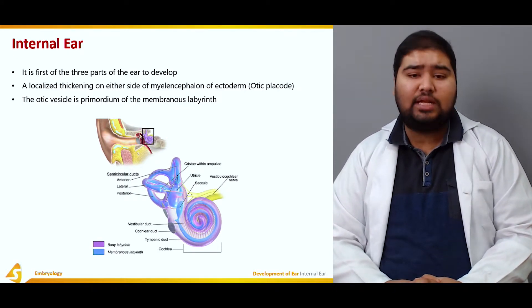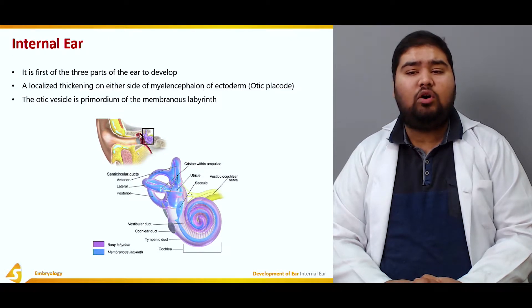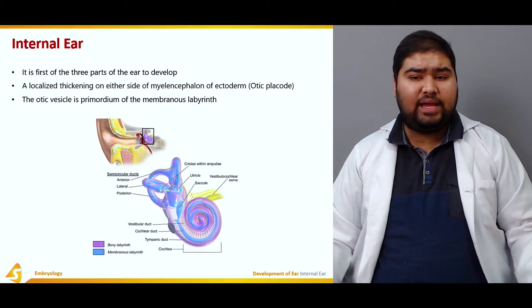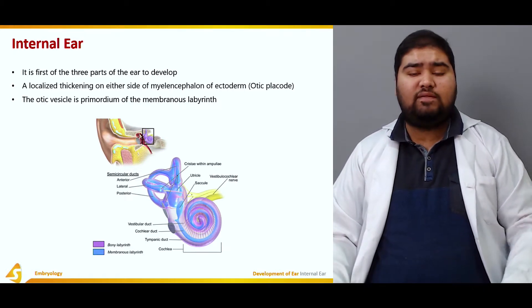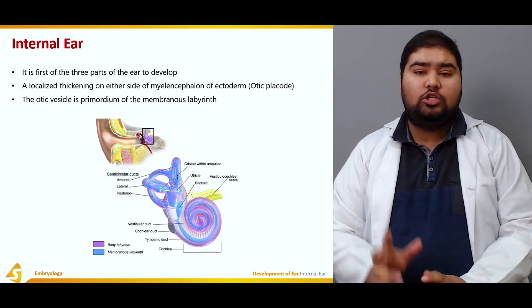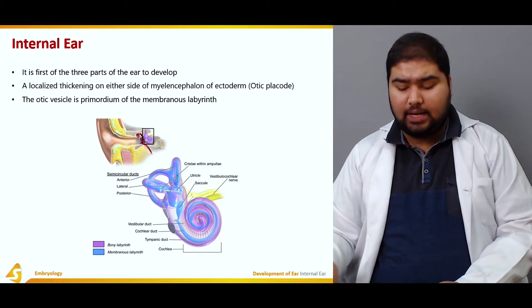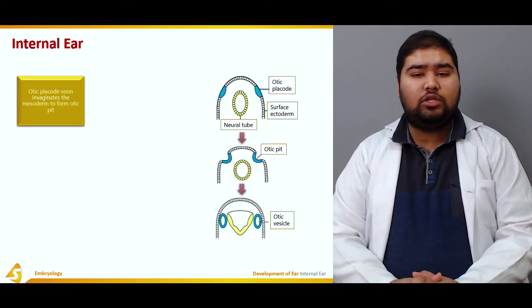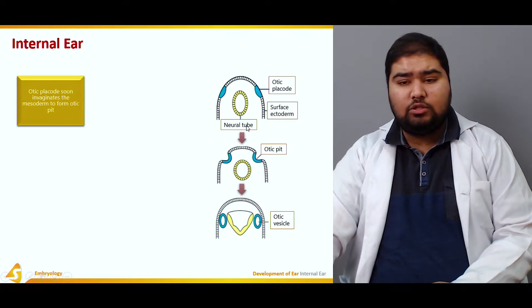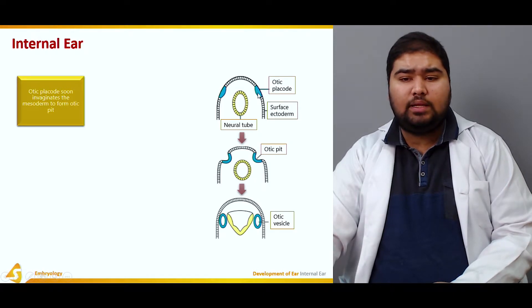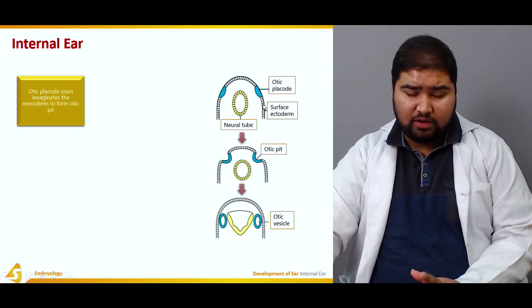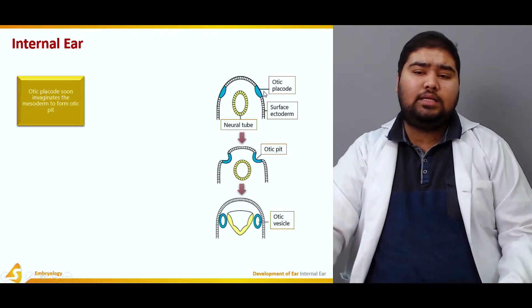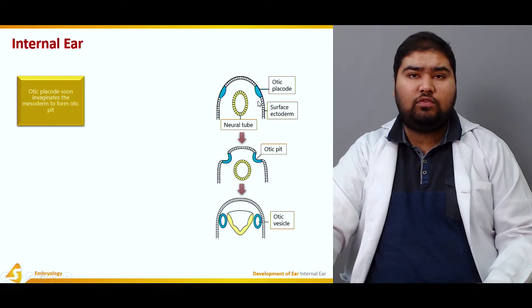The internal ear is developed as a localized swelling on either side of the myelencephalon of the ectoderm — that is, the otic vesicle is the primordium of the membranous labyrinth. So the otic vesicle forms the membranous labyrinth. First, the otic placode invaginates into the mesoderm to form the otic pit. This otic placode is formed in the ectoderm that surrounds the myelencephalon, and it invaginates into the surrounding mesodermal area to form the otic pit.